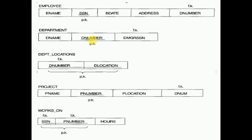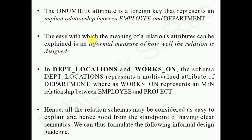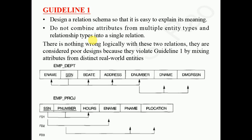This entire design is good because not all the attributes are in a single relation. Every attribute in the employee table implies the primary key, and non-prime attributes depend on the prime attribute. Similarly, department name relies on department number. Guideline one: design a relation schema so that it is easy to explain its meaning, and do not combine attributes from multiple entity types and relation types into a single relation.